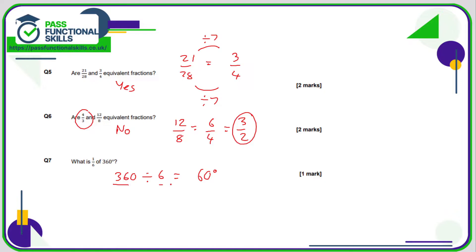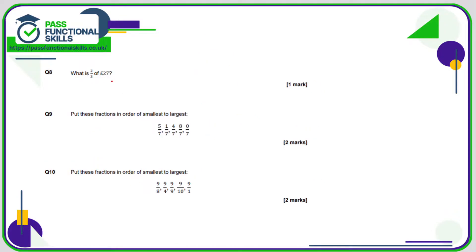Two thirds of 27: simple enough in your head, but you can use a calculator. Do you know what to do here? You need to divide by the bottom number. So take your 27 pounds, divide it by three, and then multiply by two. 27 divided by three is nine, nine times two is 18. But you can use a calculator if you prefer.